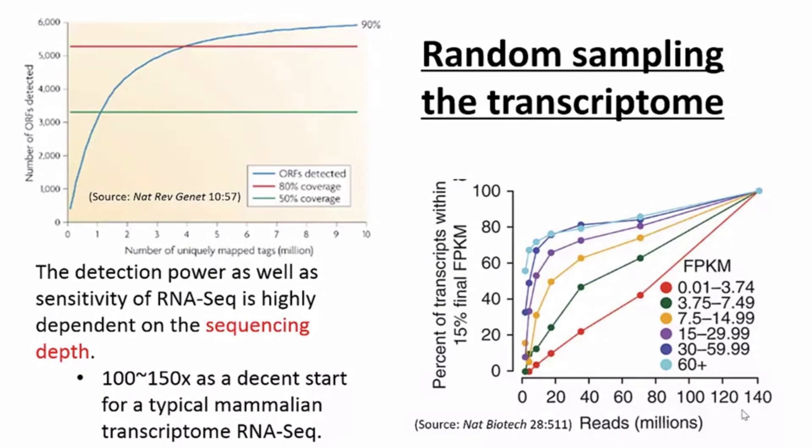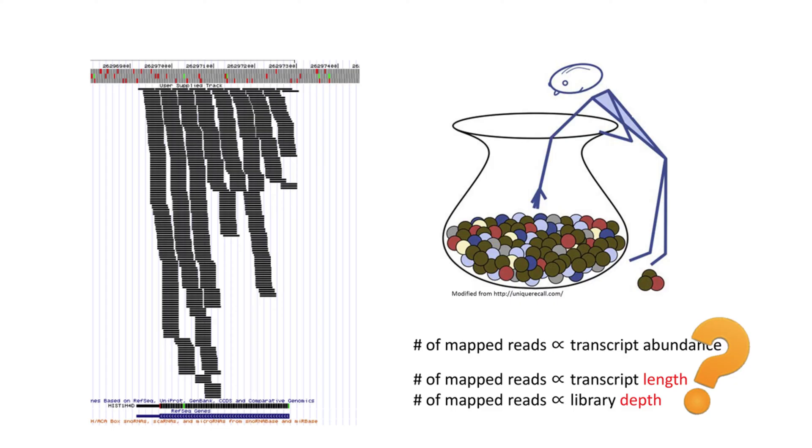A rule of thumb for the depth of sequencing mammalian transcriptomes is 100 to 150x coverage. Under the random sampling condition, the count of reads mapped to a specific transcript is positively proportional to the abundance of that transcript.